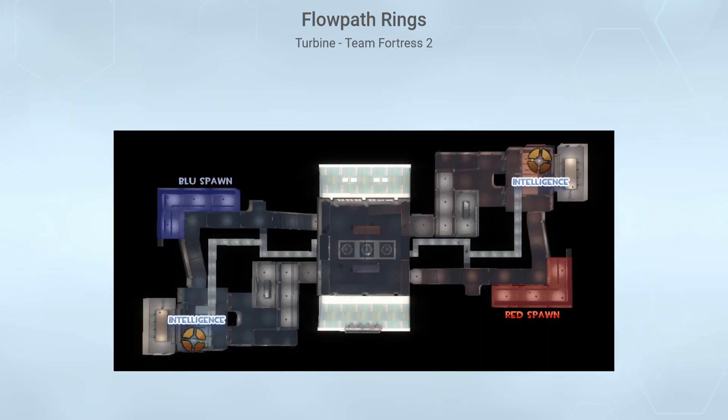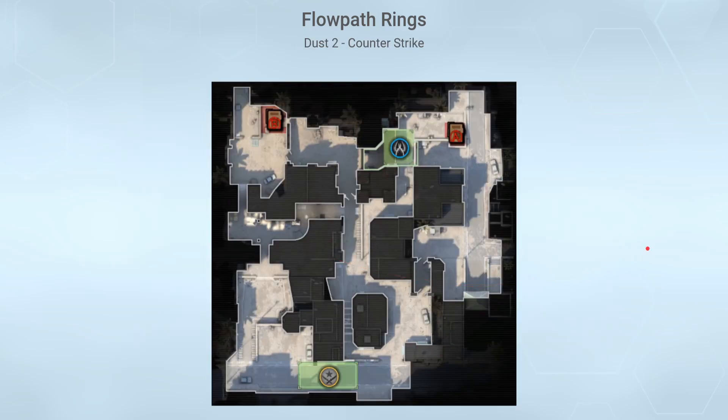This type of flow path ring structure can also be seen in capture the flag type maps like Turbine from Team Fortress 2, where we can see there's basically two main flow path rings that connect in the middle along with an additional path in the center here.